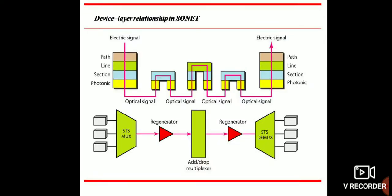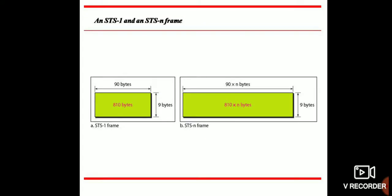This is the device layer relationship for SONET: path, line, section, photonic, electrical signals, optical signals. Path, line, section, and this is the STS multiplexer/regenerator, add-drop contact box, regenerator, STS demultiplexer, and STS-1 and STS frames.